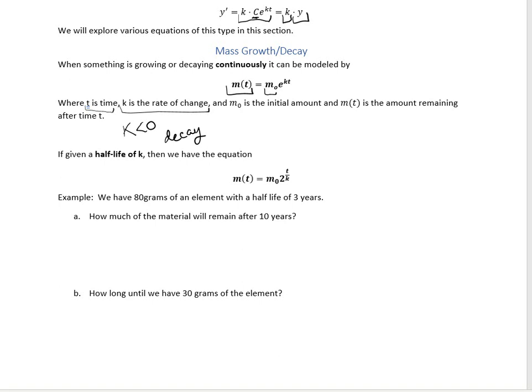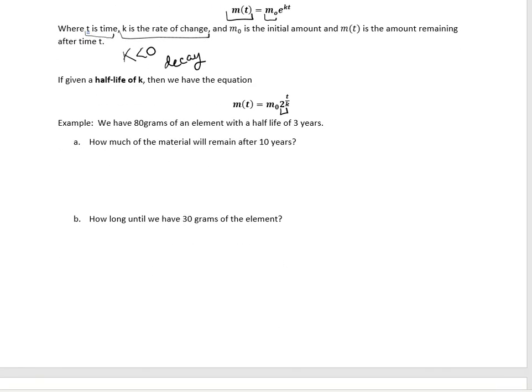Now if instead of a continuous growth rate they give you a half-life — which is really popular especially with radioactive material — then instead of using e as your base for exponential growth, you're going to use 2.